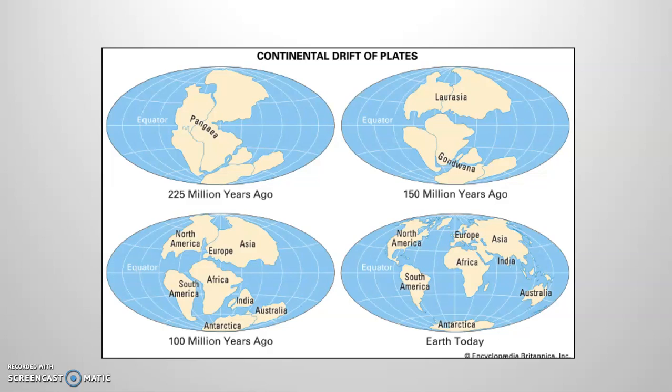About 225 million years ago, there was one single supercontinent called Pangaea, and then you can notice the progression here, where 150 million years ago it was breaking apart. A hundred million years ago, the continents as we know them today began to emerge, and then we have Earth today.